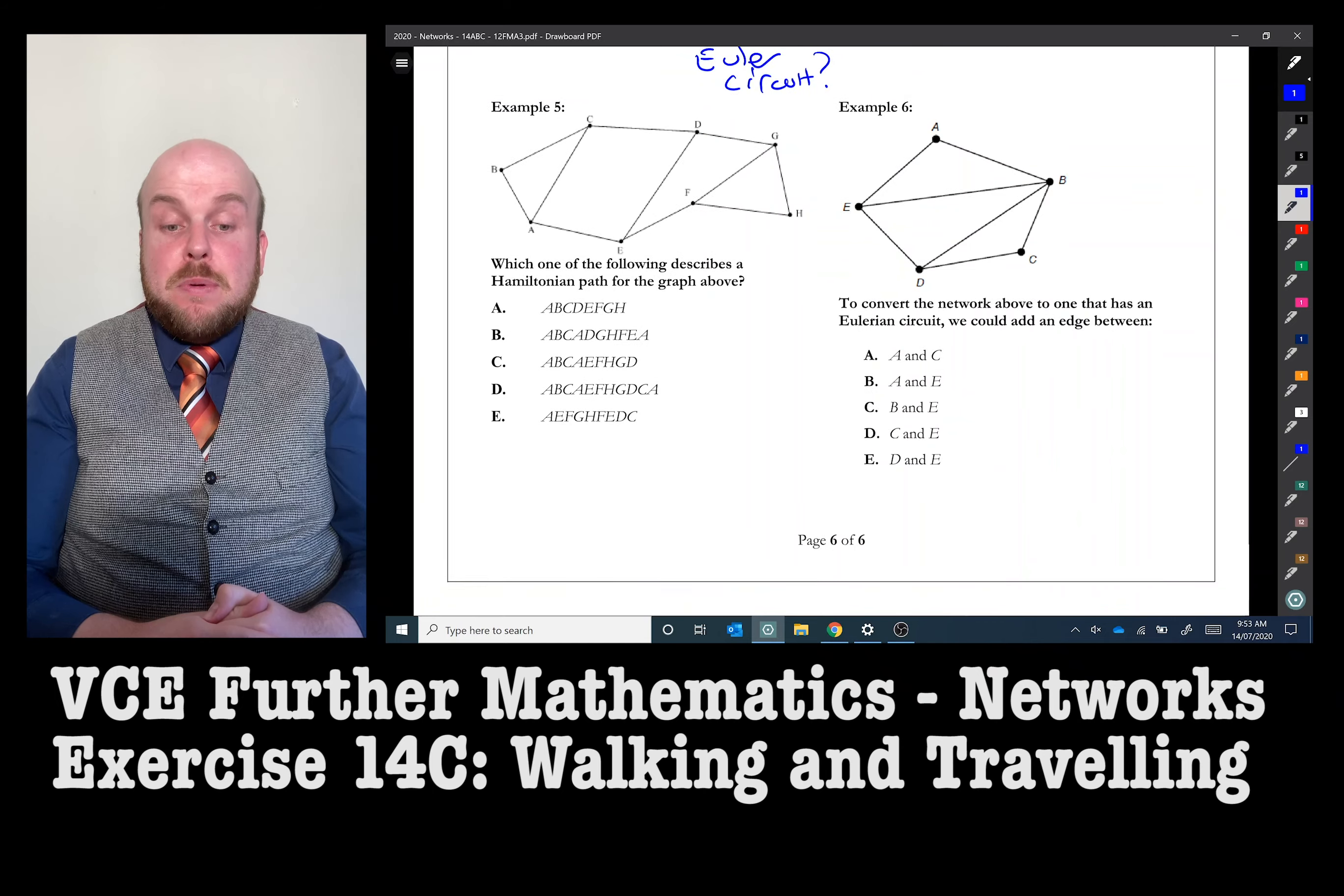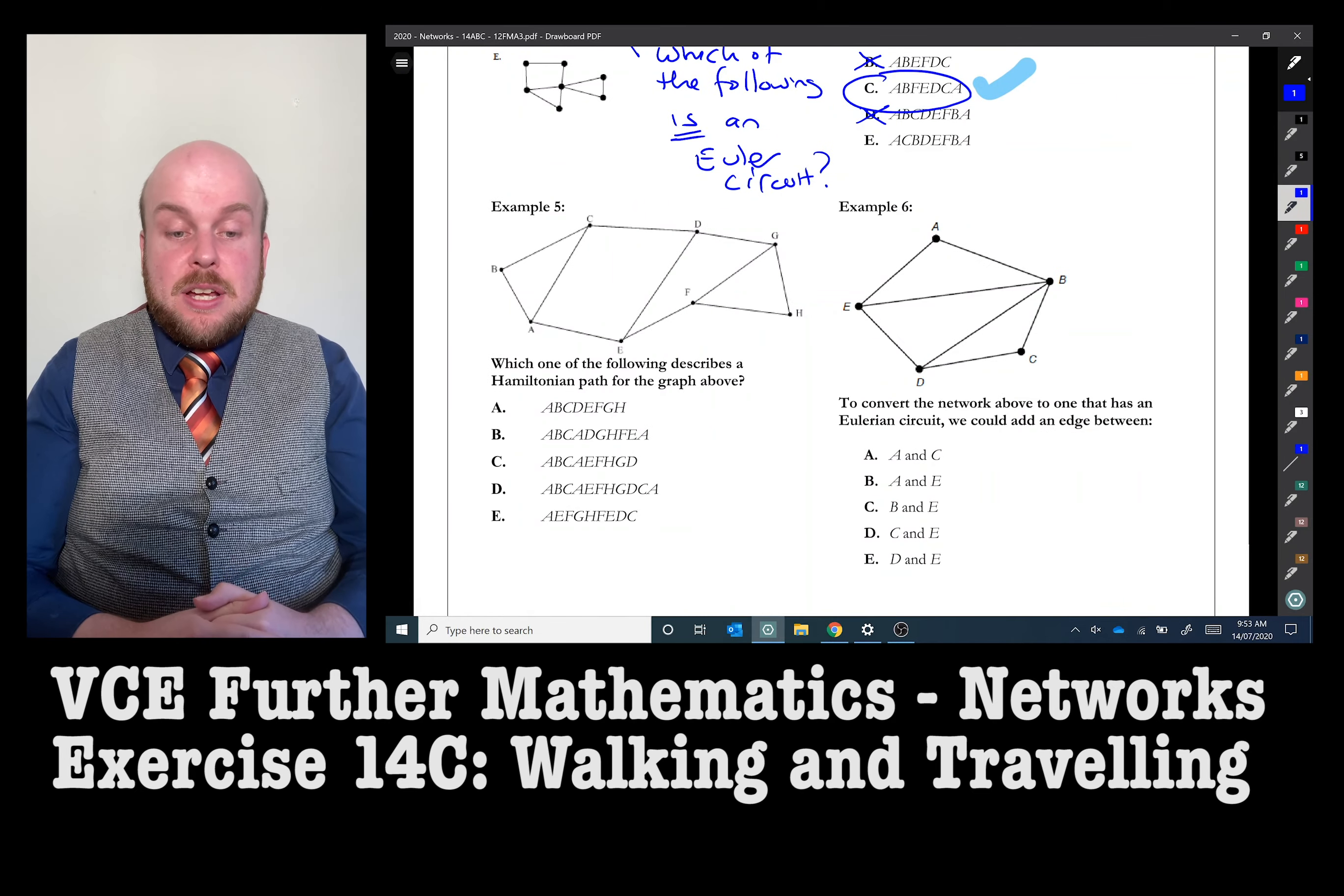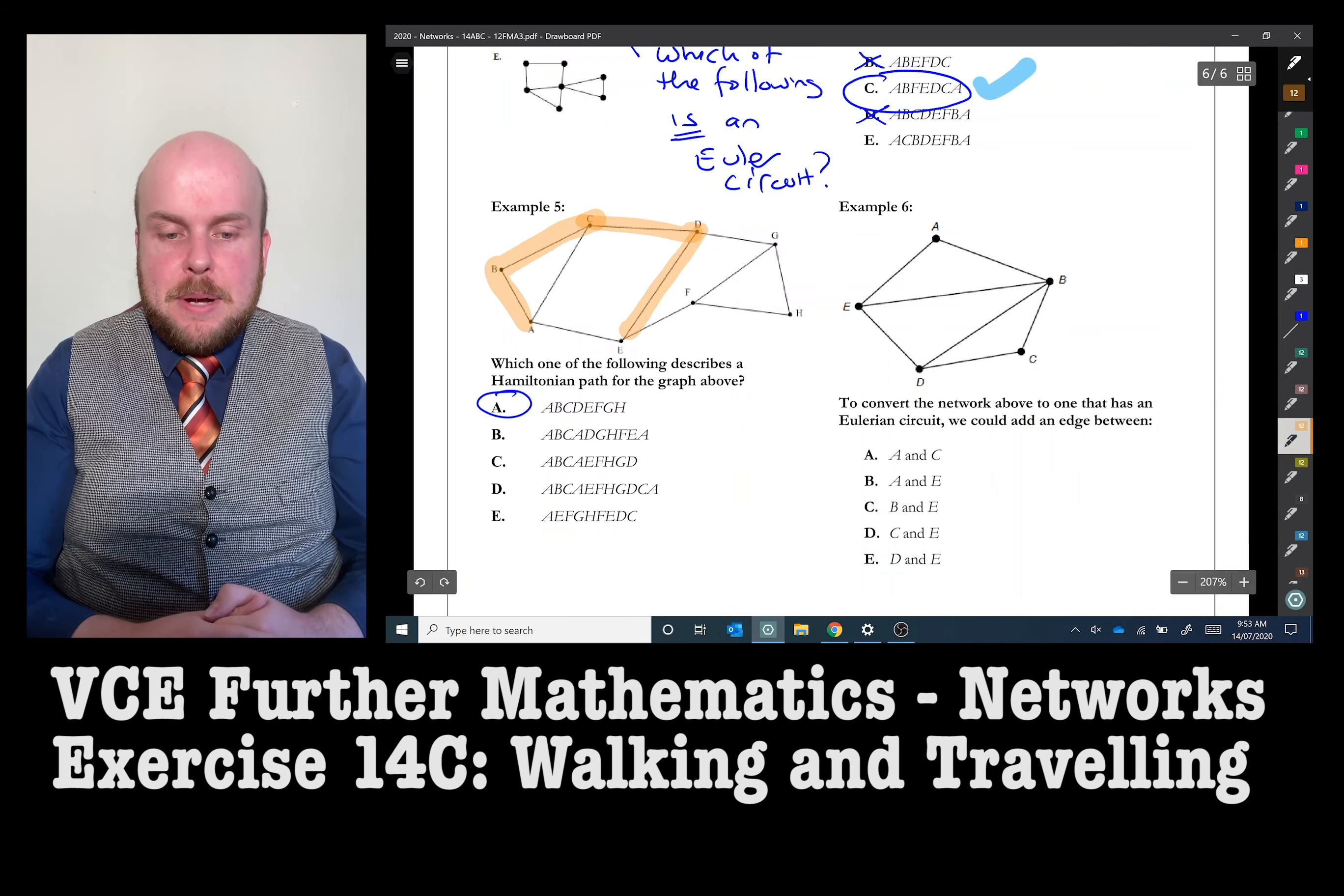Example five. Which one of the following describes a Hamiltonian path for the graph above? So if we check with A, A, B, C, D, E, F, G, H, A, to B, to C, to D, to E, to F, to G, to H, it is indeed a Hamiltonian path.